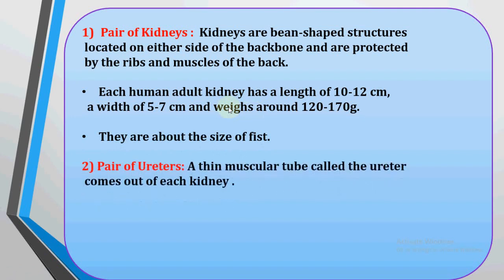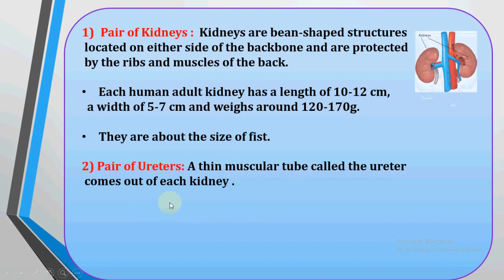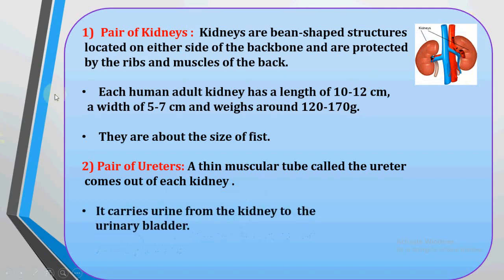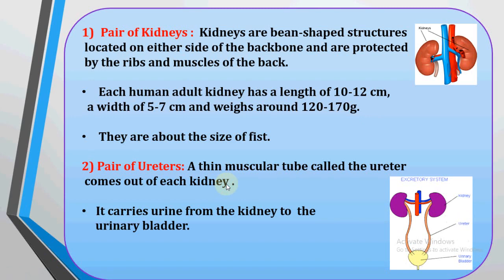The second part is a pair of ureters. A thin muscular tube called the ureter comes out of each kidney — it is a pipe-like structure. One ureter is attached to each kidney. In the diagram of the excretory system, these pipe-like structures carry urine from the kidneys to the urinary bladder.